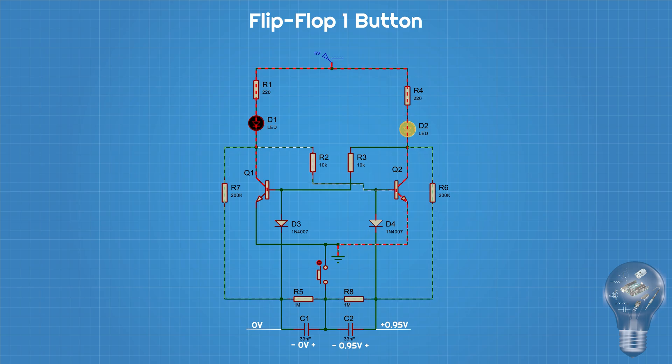making the other terminal of the capacitor have a voltage of plus 0.95 volts. This does not create current through diode D4, so transistor Q2 still receives base current through resistor R2 and is turned on. At that time, the right LED light is on.